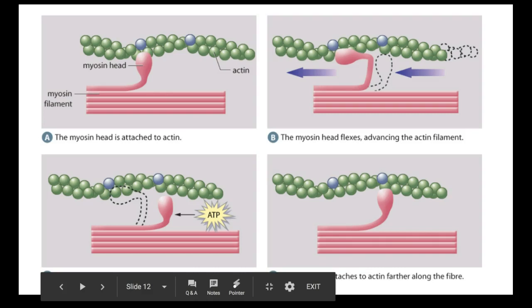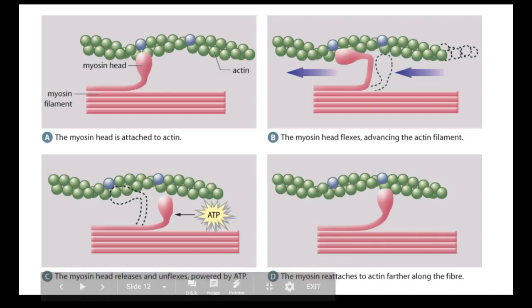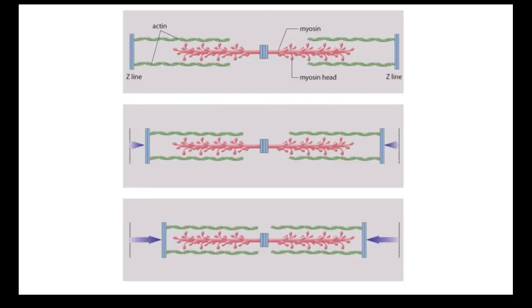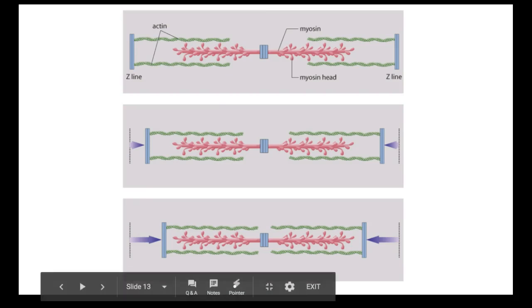Once we have flexed completely, we're going to have to use a little bit of energy to remove the myosin head, and then it's going to do that a little bit farther along. Looking at the big picture — you don't just have one myosin head, you actually have multiple. All of the myosin heads are attaching to the actin, all flexing at the same time, then removing using ATP and pushing in further. So the actin is a little bit further and closer together, doing this over and over again.